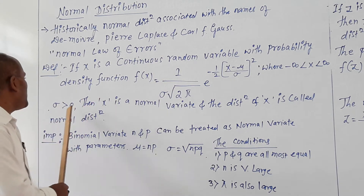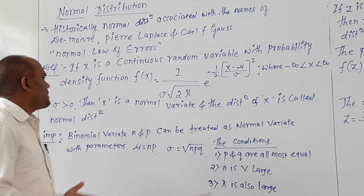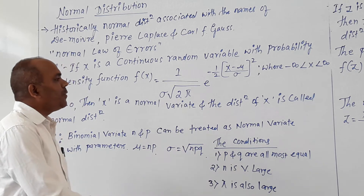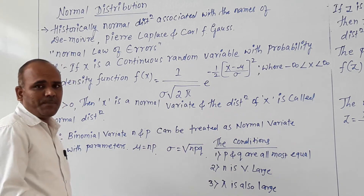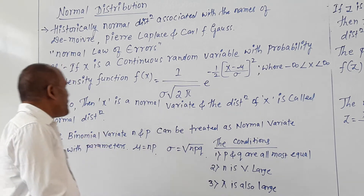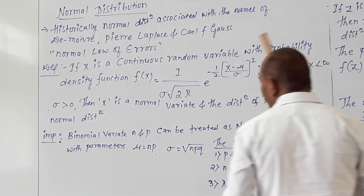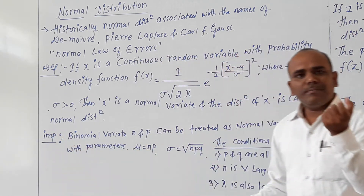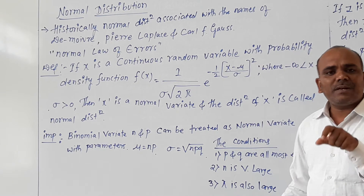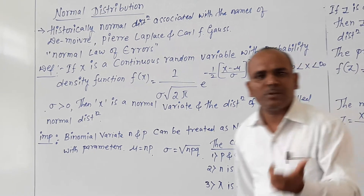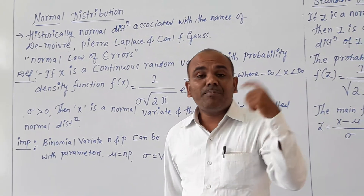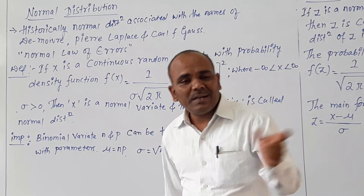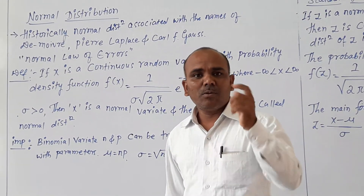The sigma value is also greater than zero. Then x is considered as a normal variable and the distribution of x is called a Normal distribution. The distribution is treated as a Normal distribution under certain conditions.